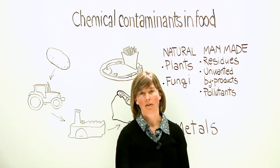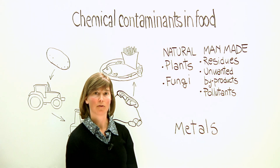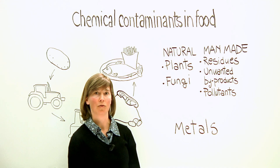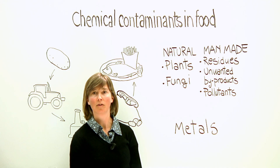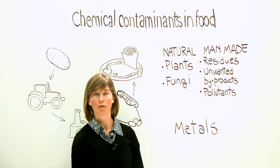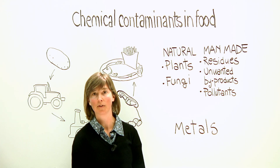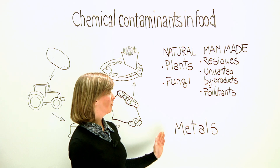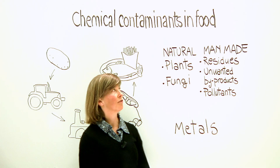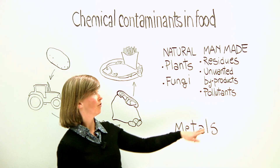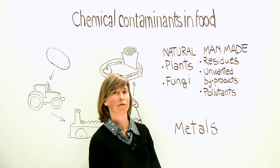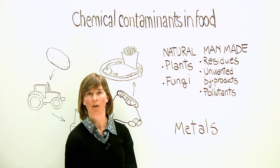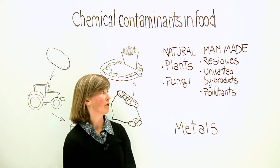Pollutants as a result of man's activity are in the environment — in soil, water and in the atmosphere — and can contaminate our food. Such pollutants as dioxins and brominated flame retardants tend to accumulate in the fat of animals and in fish such as oily fish. We also have metals. Metals are naturally occurring but tend to enter into our foods due to the activities of man, such as car exhaust or industrial smoke contaminating the atmosphere.